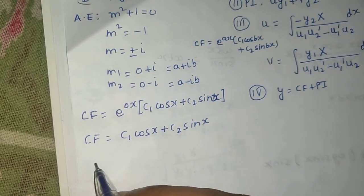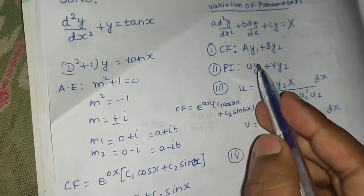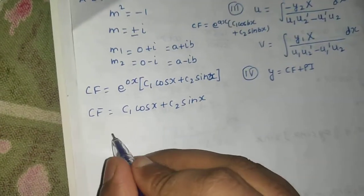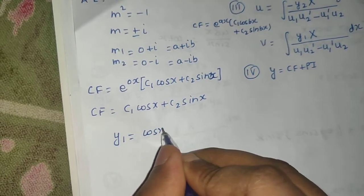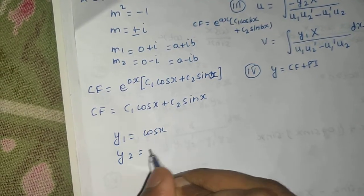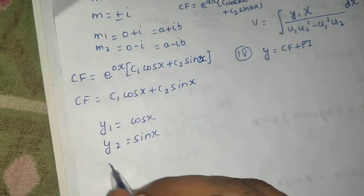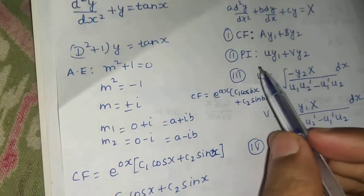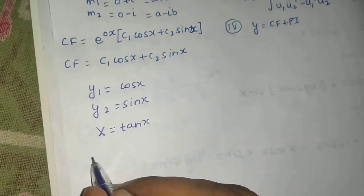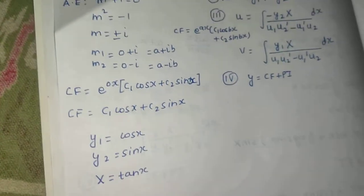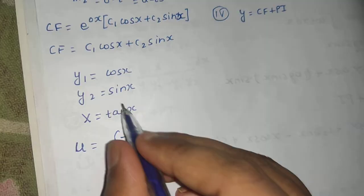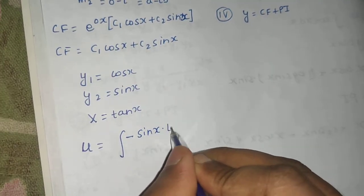Comparing with the general form, y1 = cos x and y2 = sin x, and X (the right-hand side) is tan x. Now we can move ahead with the particular integral. For that we need u and v, so u = integral of minus y2·X divided by the Wronskian.